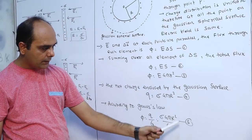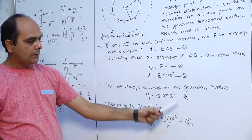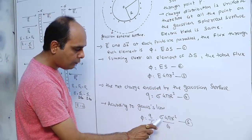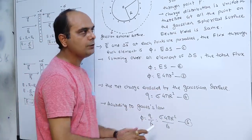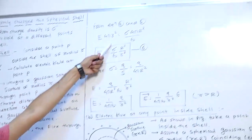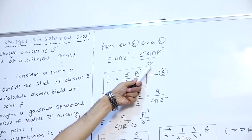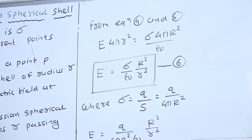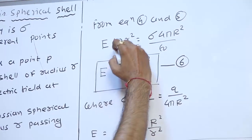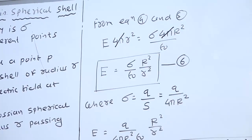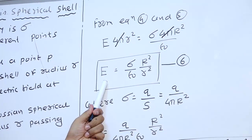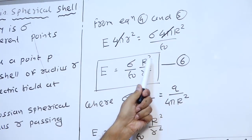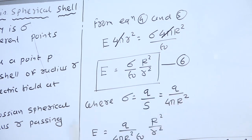Now comparing equations 3 and 5: E times 4 pi r squared equals sigma times 4 pi R squared divided by epsilon-zero. On both sides, 4 pi cancels, therefore E equals sigma by epsilon-zero times R squared by r squared, equation 6.